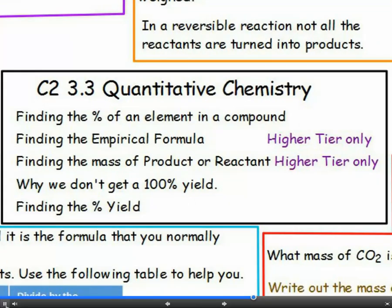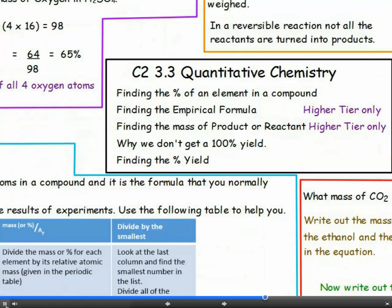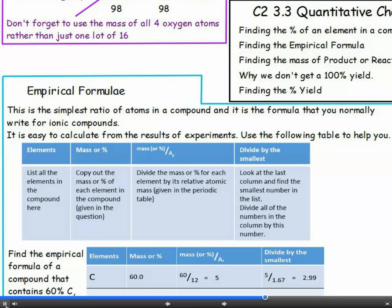The empirical formula is on the higher tier only, but it's not too hard to do if you follow a basic method. Use the table shown here to help you work out an empirical formula. The elements and their masses or percentages will be given in the question, so you can just copy those out. Remember, the relative atomic mass is on the periodic table.